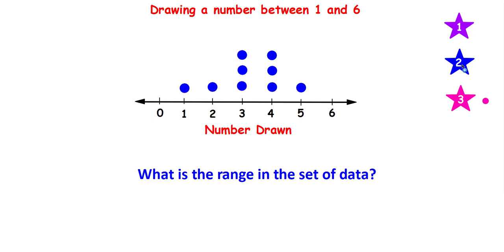What is the range in the set of data? The range is always the biggest number minus the smallest number. The range in the set of data is 4.